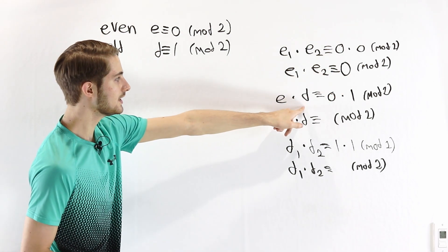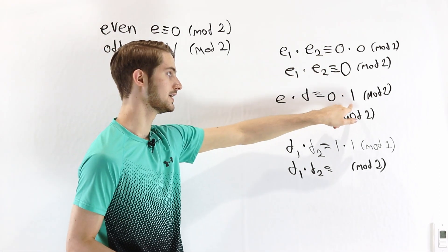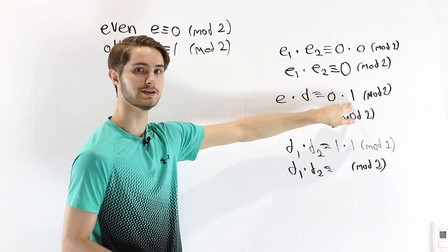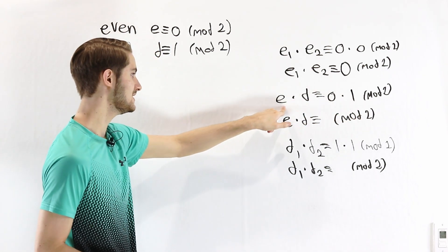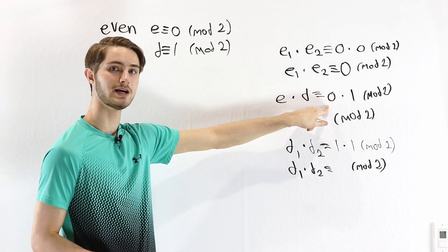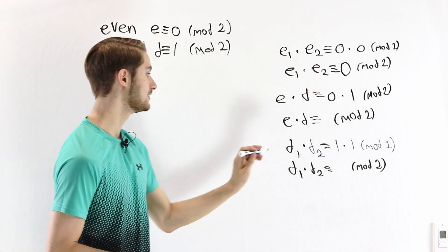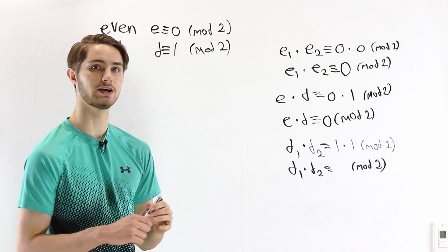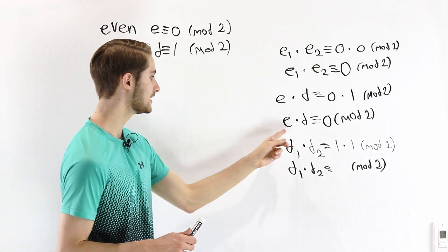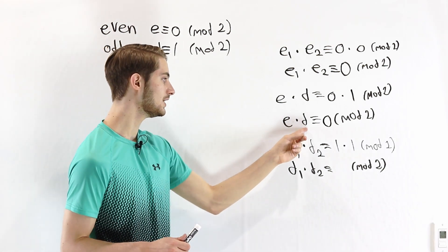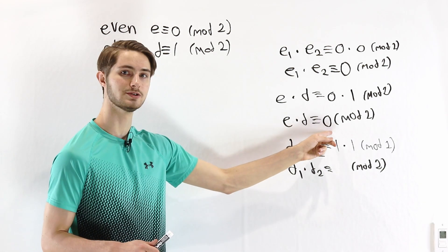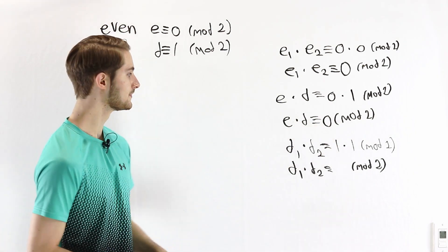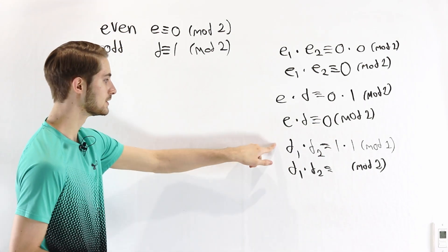For an even times an odd number, we're looking at 0 times 1. It doesn't matter what the odd number contributes, because we have an even number we're multiplying by 0. Any time we multiply by 0, we get 0 as our result. So when we multiply an even and an odd number, the result is congruent to 0, which means it is also even.